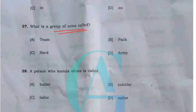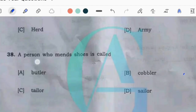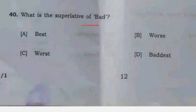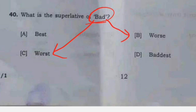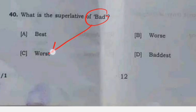What is the group of cows called? The best option is: group of cows is called a herd. The superlative form of bad — bad, worse, worst. This is the superlative form. The best option is worst.